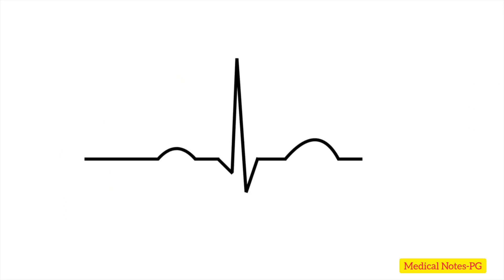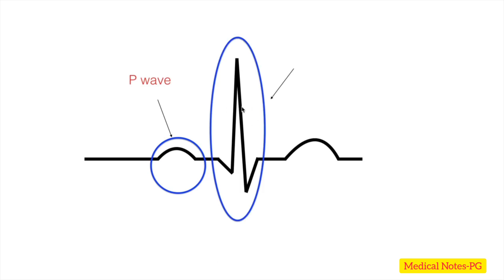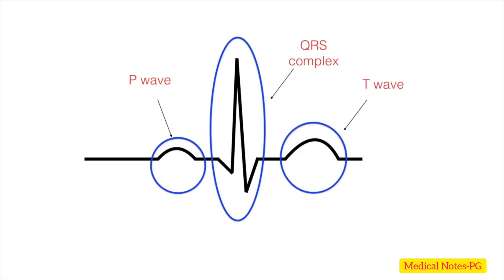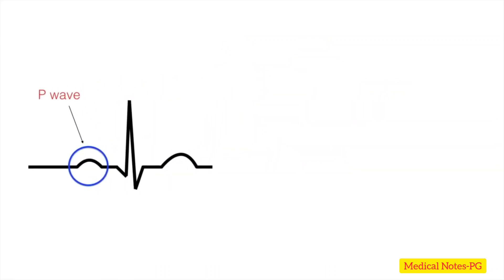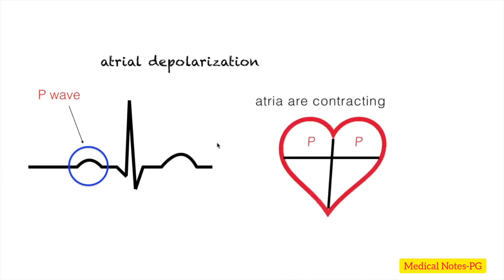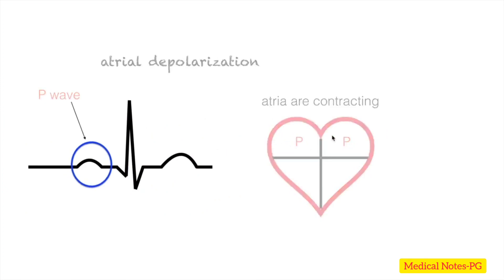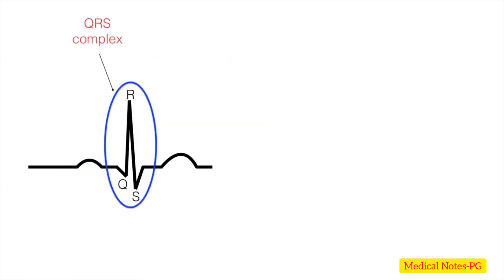Now let's talk about EKG. It has different parts: starting with a small bump called the P wave, followed by a tall structure called the QRS complex, and lastly the T wave after the QRS complex. The P wave represents atrial depolarization — during atrial depolarization, the two atria are contracting.